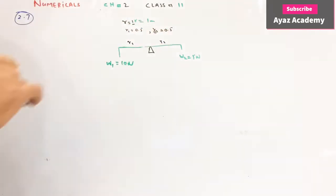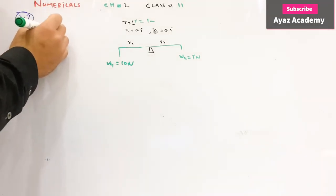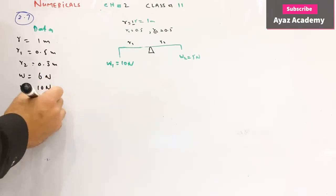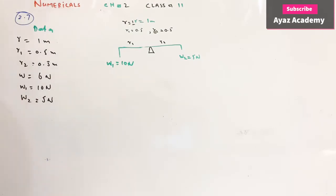If it is given data, the total length of rod is 1 meter. R1 is equal to 0.5 and R2 is equal to 0.5. The total rod weight is 6 newton.